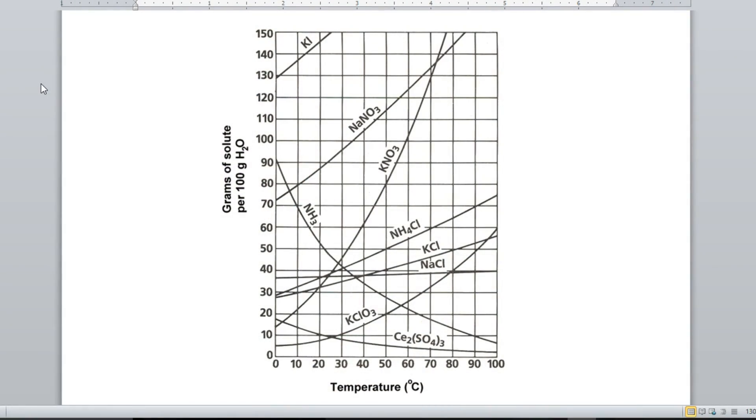Okay, so what we're looking at here is called a solubility curve. Alright, on the x-axis down here, we've got temperature. On the y-axis up here, this is the grams of the solute. So basically, it's the solubility of that substance.